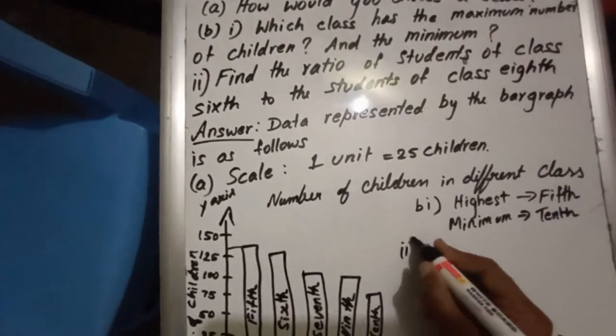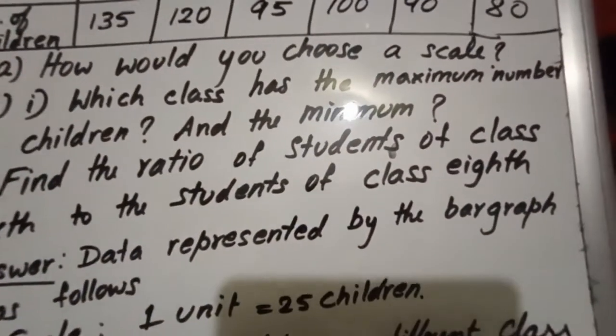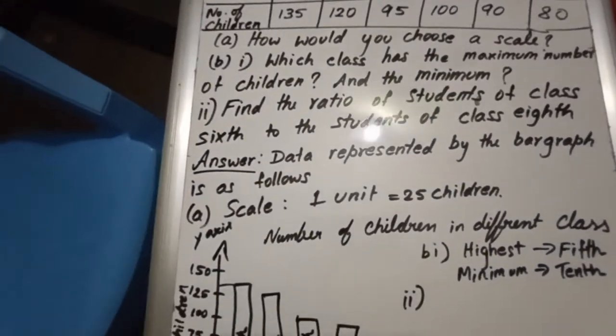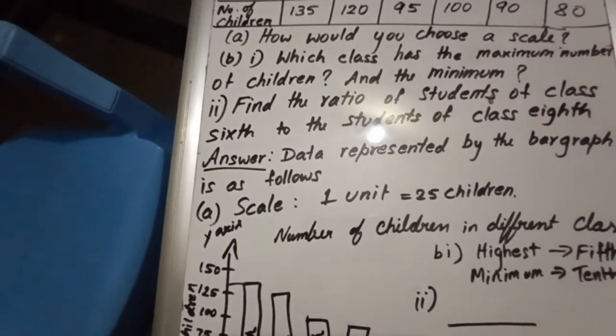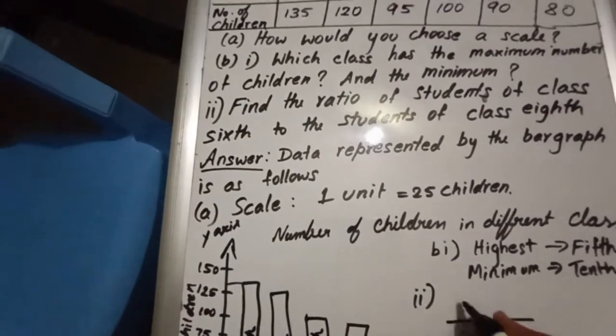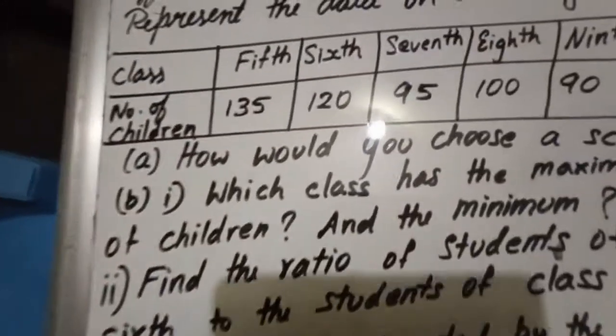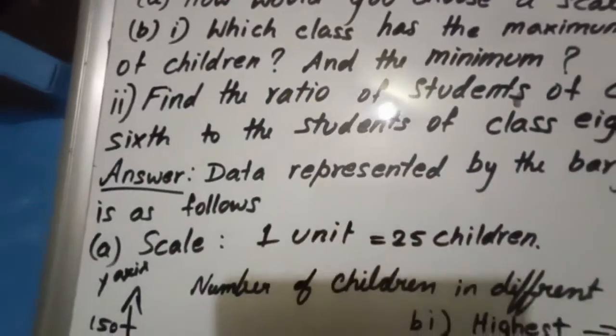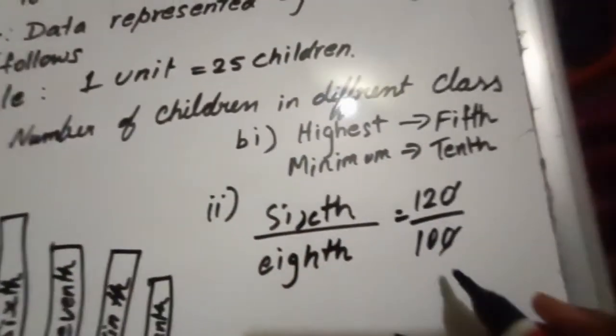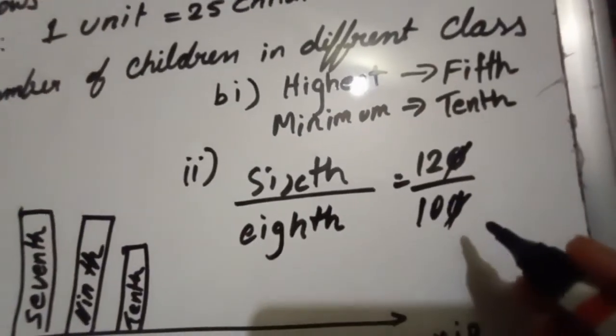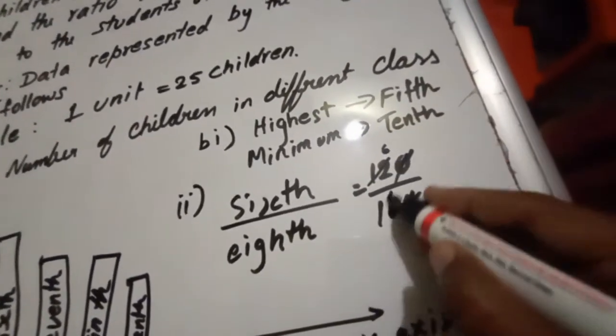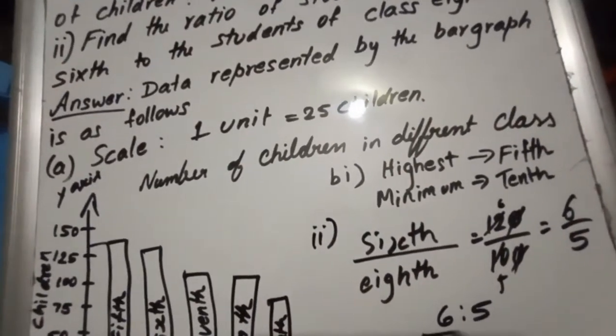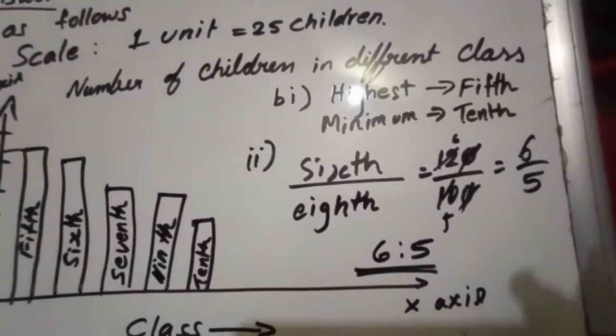In that, the second question they have asked: find the ratio of the students of class 6th to the students of class 8th. Let us take 8th and 6th. 6th class strength is 120. 8th class strength is 100. So 0 0 cancelled, 0 0 cancelled. Now we have to write the ratio: 6 to 5. So the ratio is 6 is to 5. This is the answer for the B second sub question.